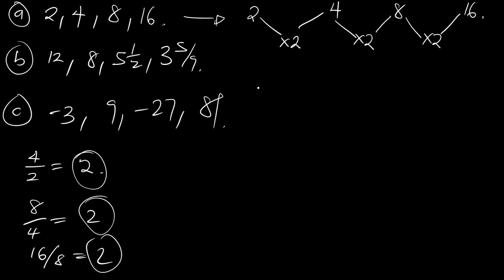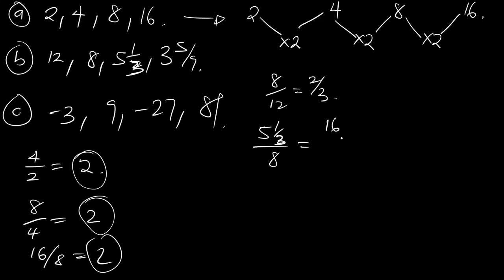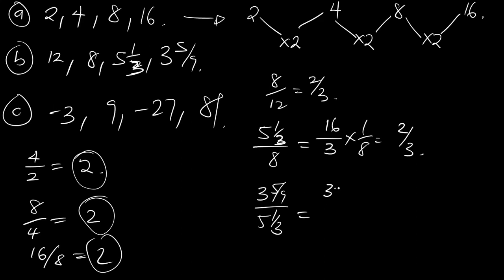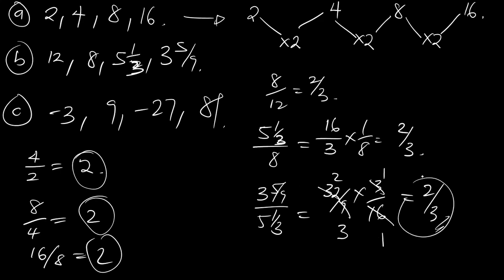Let's also look at the second sequence. 8 divided by 12 gives you 2/3. 5 and 1/3 divided by 8: this is 16/3 times 1/8, which gives us 2/3. Then 3 and 5/9 divided by 5 and 1/3: this gives us 32/9 times 3/16, which simplifies to 2/3. So you see you will have a common feature here as well.